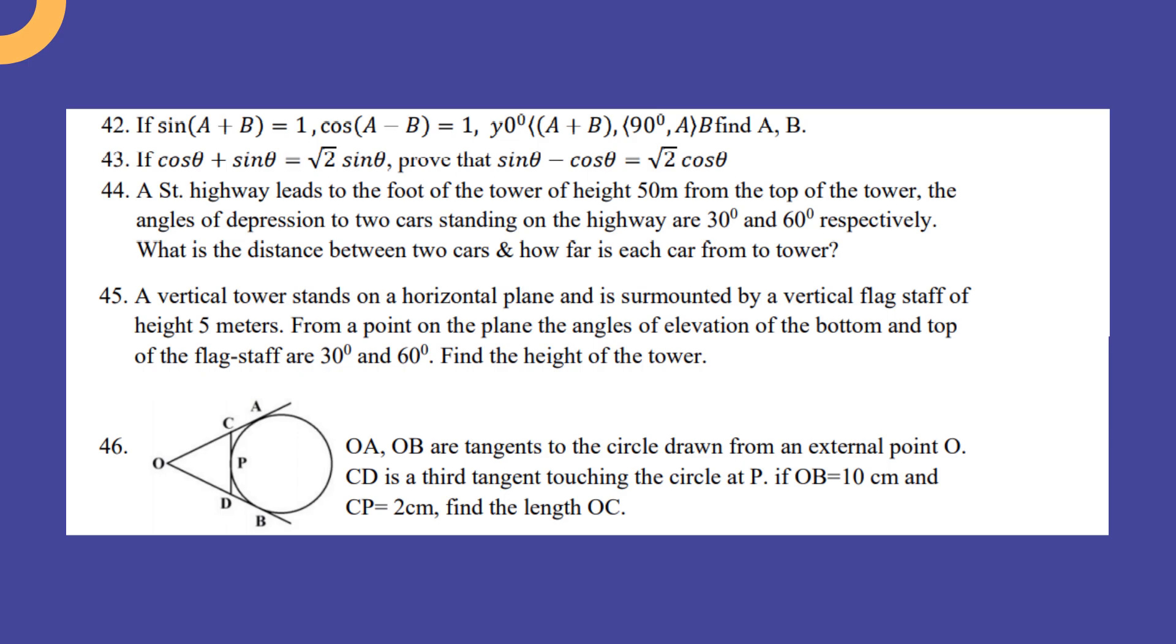A state highway leads to the foot of a tower of height 50 meter. From the top of the tower, the angle of depression of two cars standing on the highway are 30° and 60° respectively. What is the distance between the two cars and how far is each car from the tower?